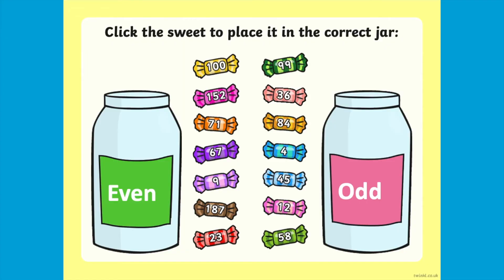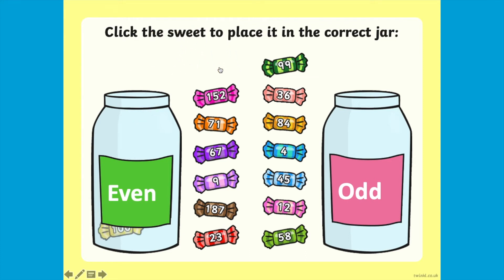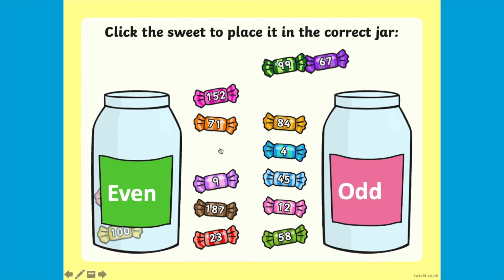Hi, I'm Georgina from Twinkl and in this video we're going to be looking at our odd and even sorting activity you can find on our website. This resource is interactive so all you need to do is click on the sweet and it will move to the correct jar based on if it's odd or even. Before clicking the sweet, you could discuss with your children whether they think the sweet is an odd or even number and how they know this.